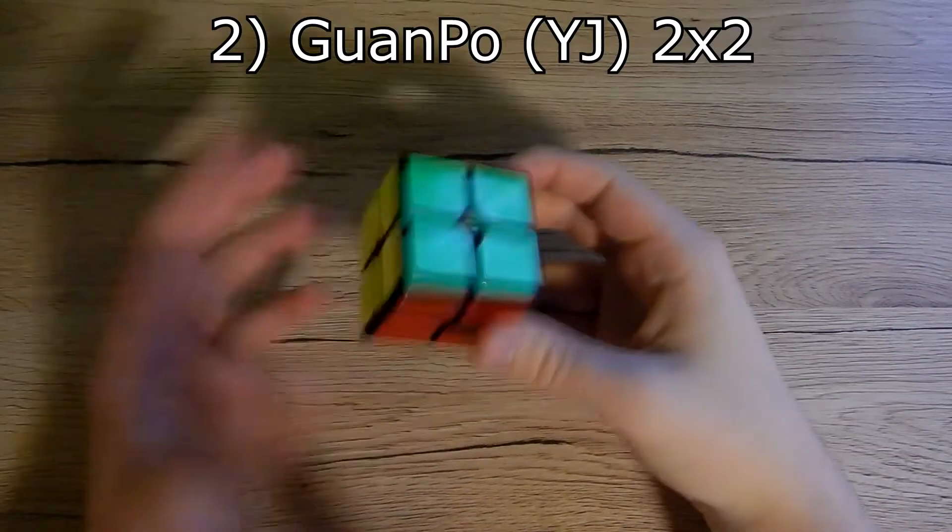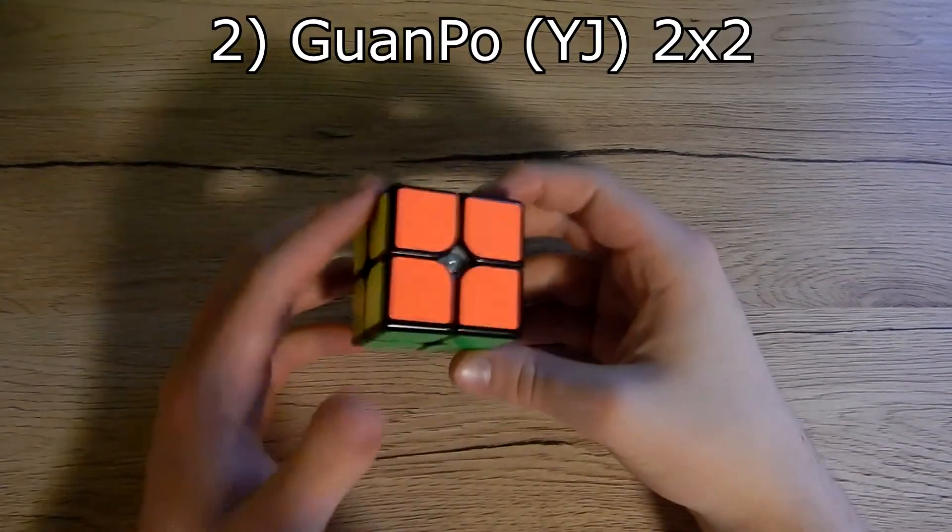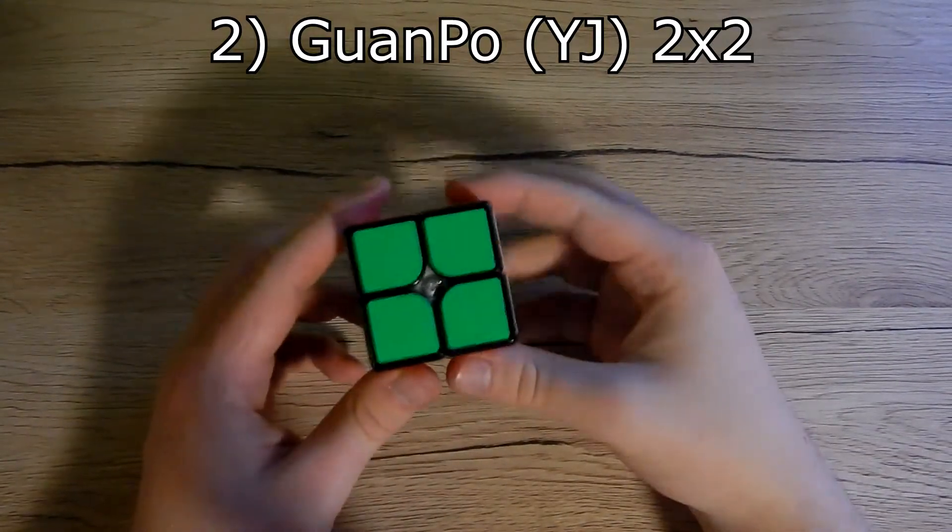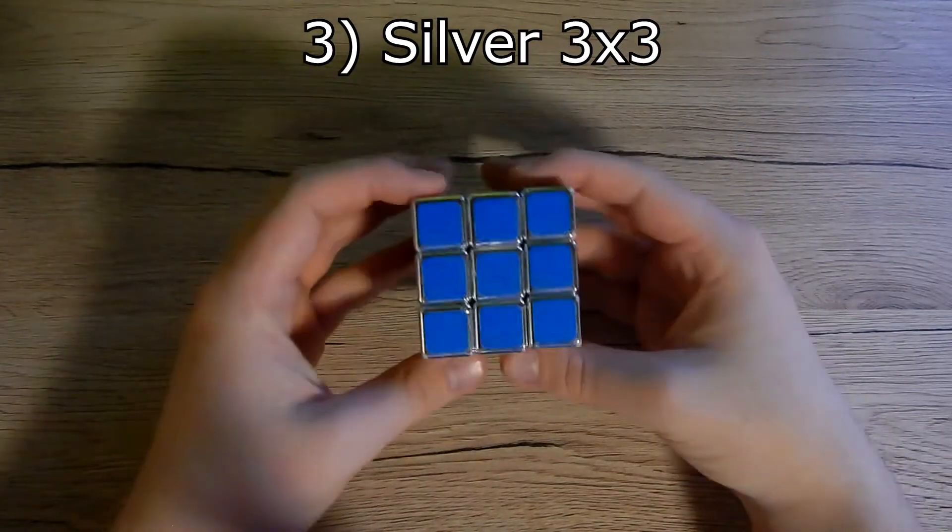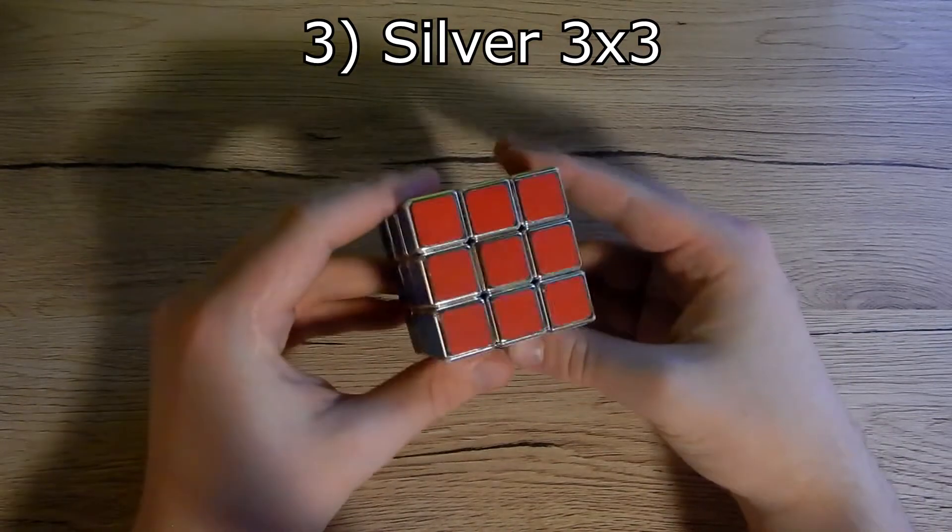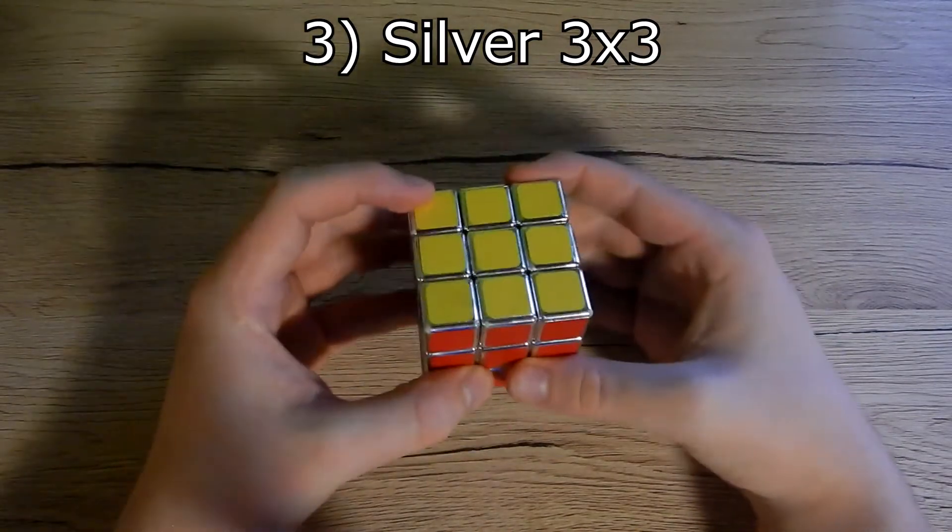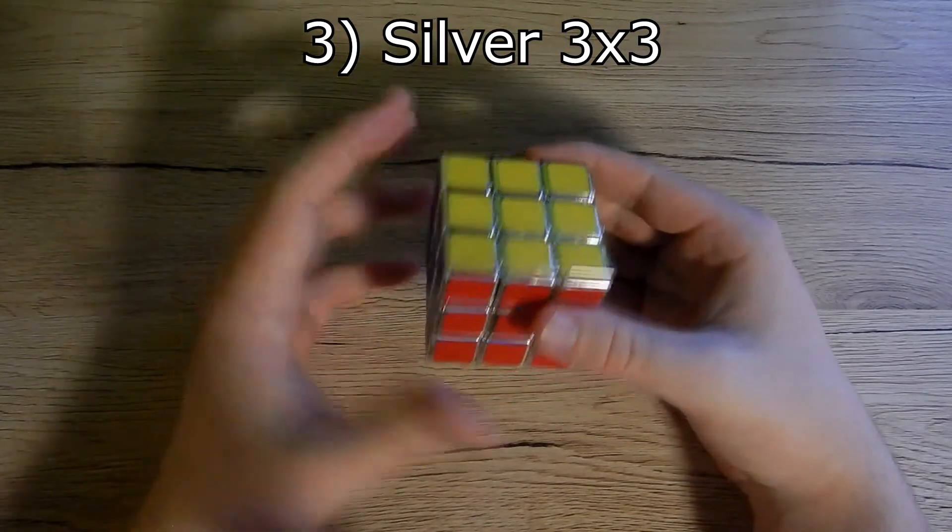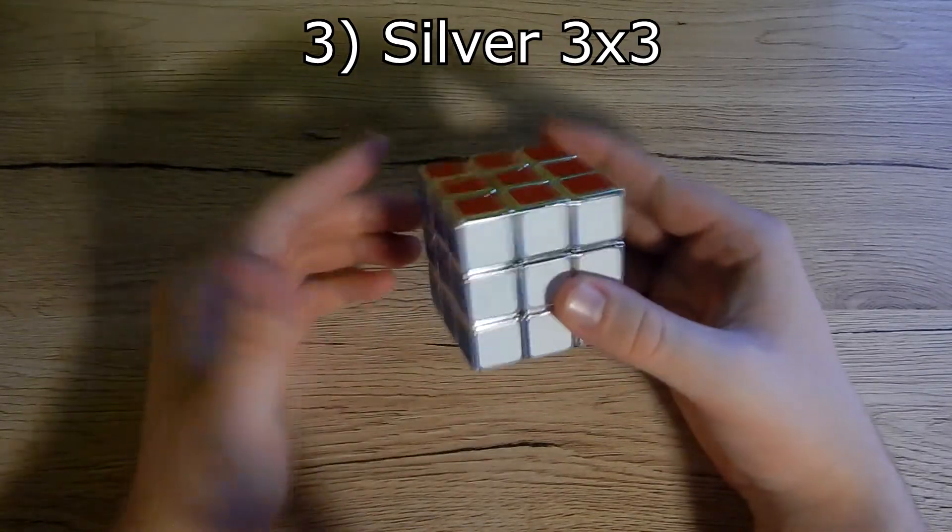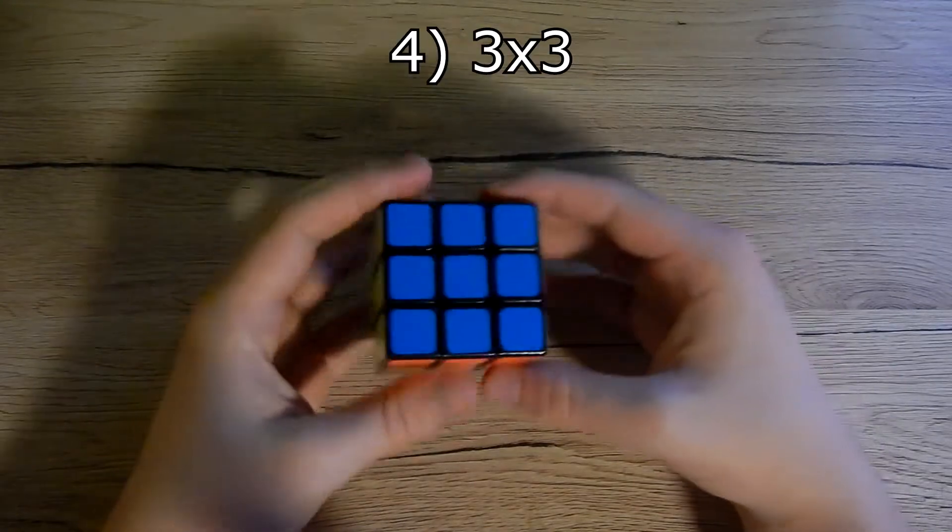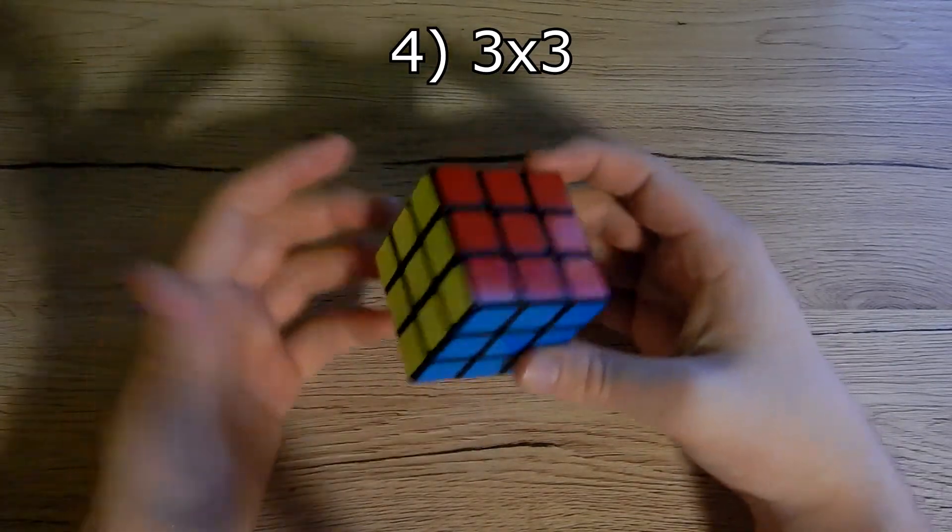Next we have my main 2x2, and it's Guan Po. Next we have this 3x3, and it was the first cube I ever solved and it was the beginning of my cubing journey.